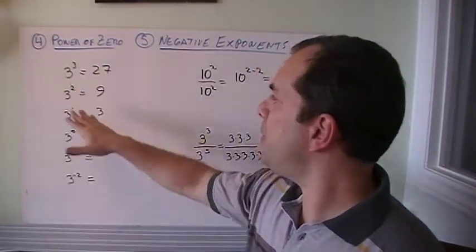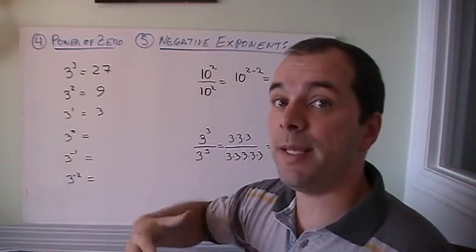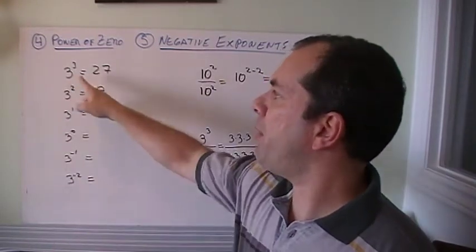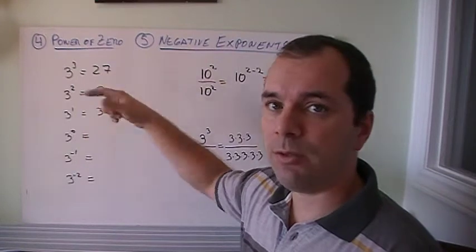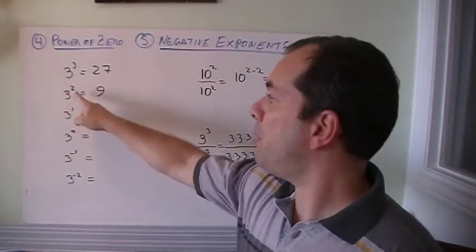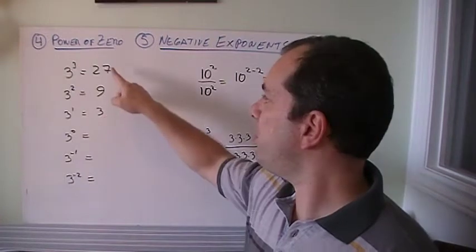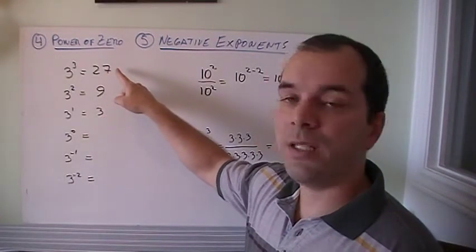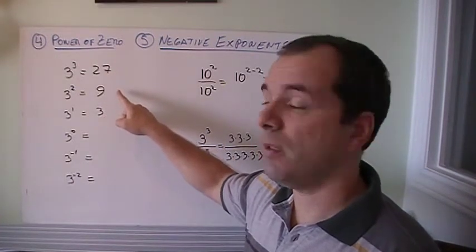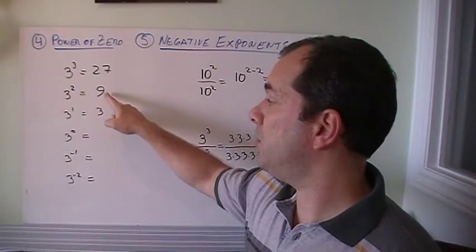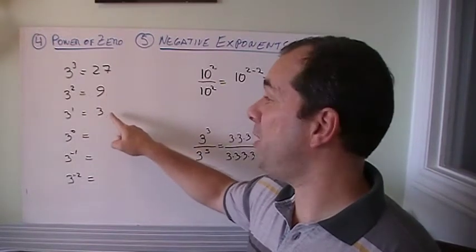I'm going to do this little example and show you in a couple more ways how this makes sense. You know that 3 to the power of 3 is 27, because it's 3 times 3 times 3. 3 to the power of 2 is 9, and 3 to the power of 1 is 3. Well, how do you go from here to here? 27 divided by 3 gives you 9. 9 divided by 3 gives you 3.